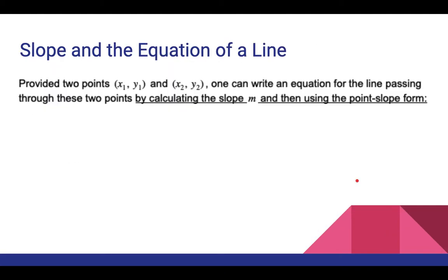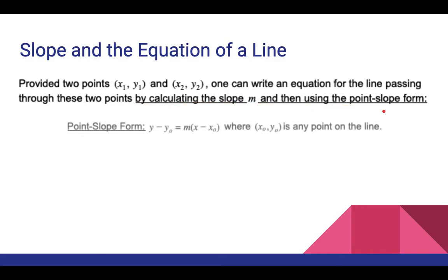Slope and the equation of a line. Provided two points x1, y1 and x2, y2, one can write an equation for the line passing through these two points by calculating the slope m, and then using the point-slope form. The point-slope form is y minus y0 equals m times x minus x0, where x0, y0 is any point on the line. This equation you need to know for calculus — it is absolutely necessary, and this is the standard equation with which we will work.